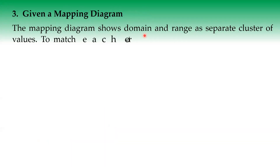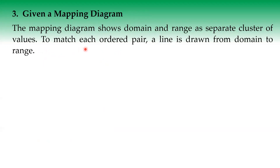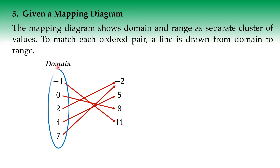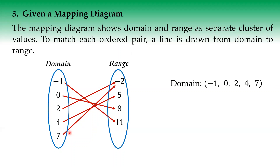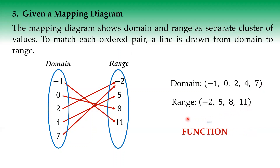Next, I will be giving a mapping diagram. The mapping diagram shows domain and range as separate clusters of values. Lines are drawn from domain to range to match ordered pairs. So we have domain values and range values: negative one paired with eleven, zero with positive eight, two with negative two, four with positive five, seven with negative two. Domain is negative one, zero, two, four, seven. Range is negative two, five, eight, eleven. So this is a function, because each x value has a unique mapping.